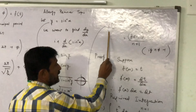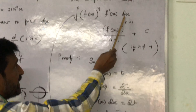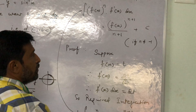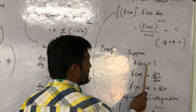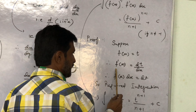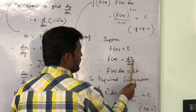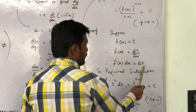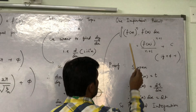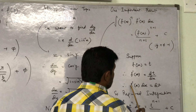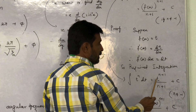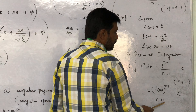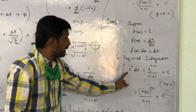One important result: ∫[f(x)]^n · f′(x) dx = [f(x)]^(n+1) / (n+1) + C, if n ≠ −1. Proof: suppose f(x) = t, then f′(x) dx = dt. So ∫[f(x)]^n · f′(x) dx = ∫t^n dt = t^(n+1)/(n+1) + C. Replacing t by f(x): [f(x)]^(n+1)/(n+1) + C.